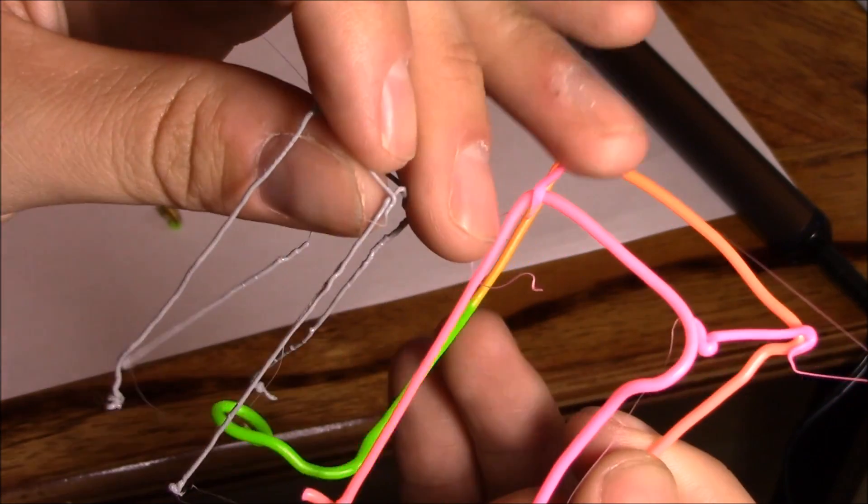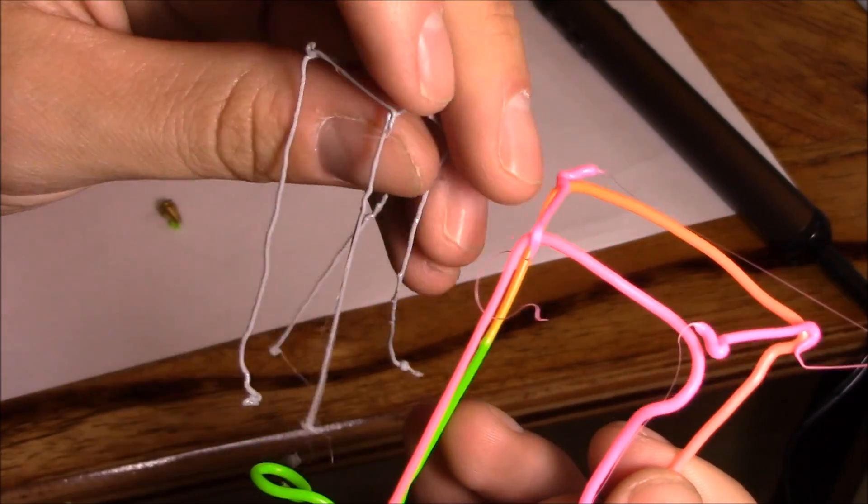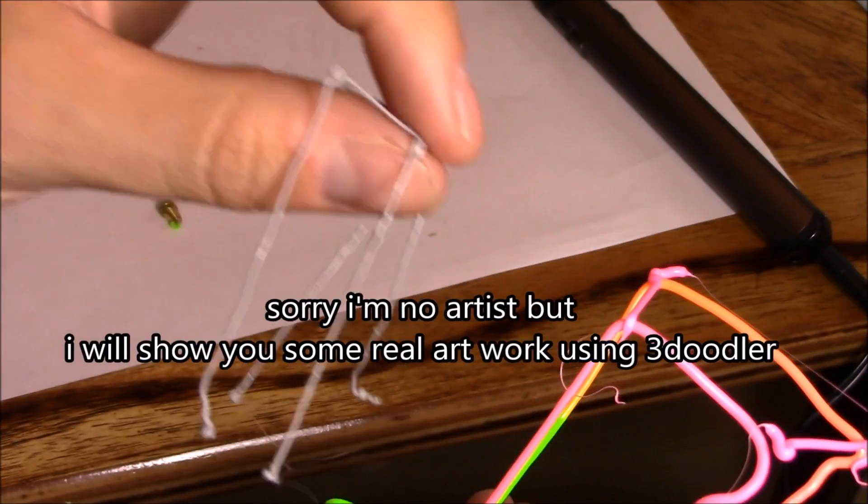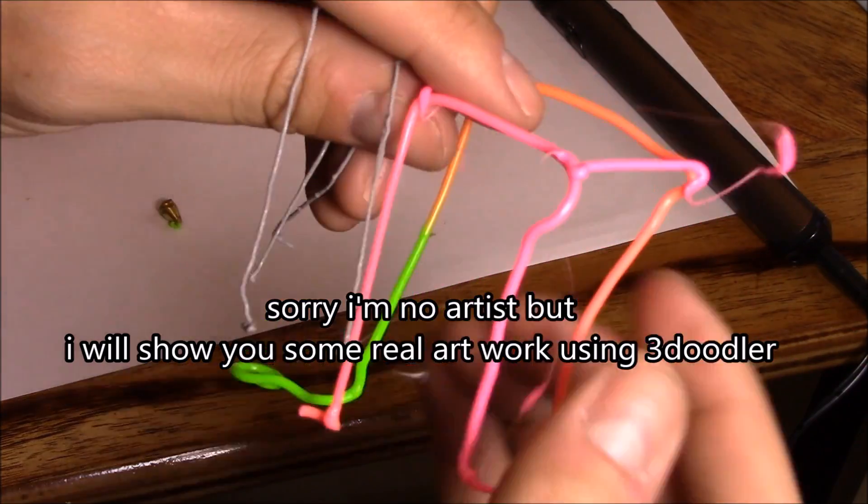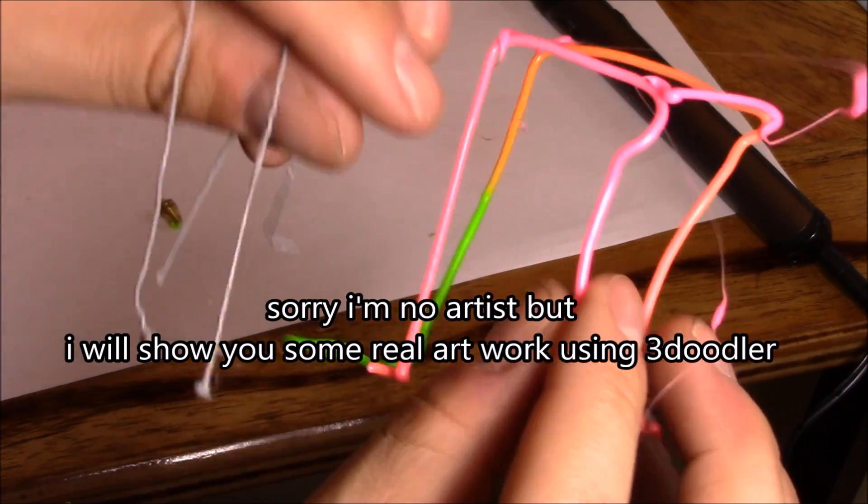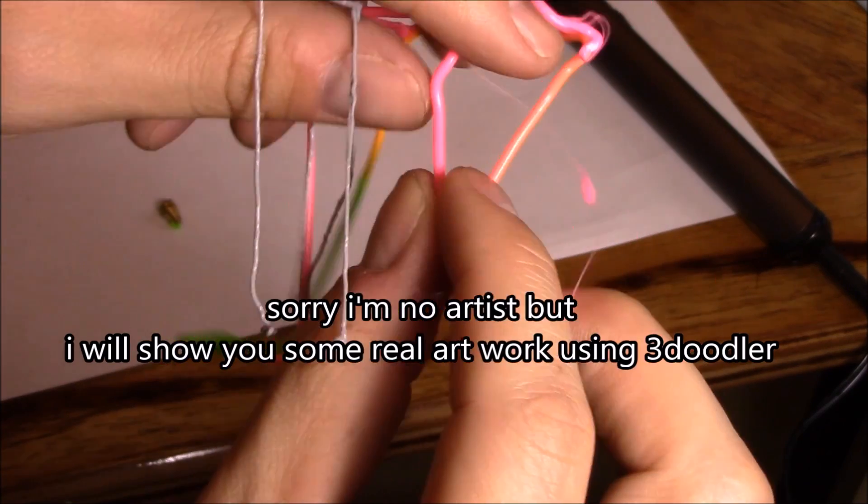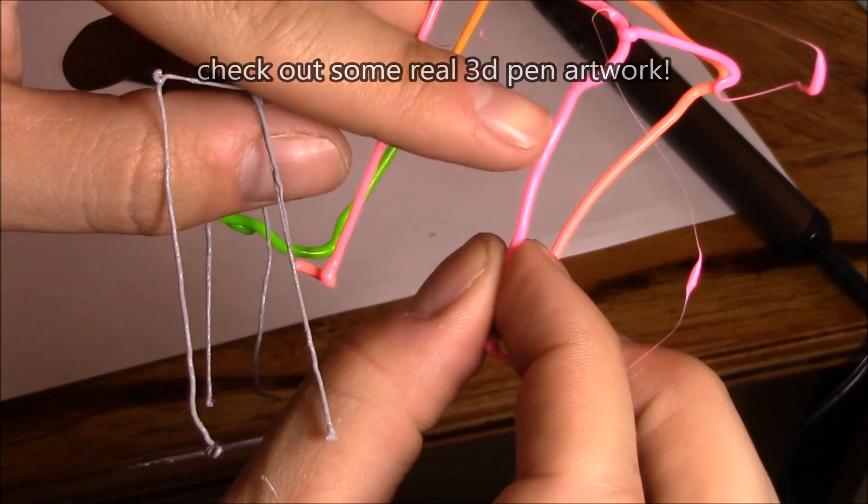So here's my two 3D doodles. One's for the PLA plastic strands and this is for the ABS plastic strands. Now I did take off the tip, so you can see how much thicker and cleaner the lines are when you take off the tip.